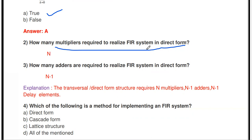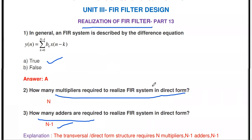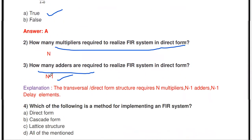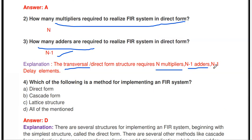How many adders are required to realize the FIR system in direct form? The answer is N-1 adders. Since there are N terms in the equation, to add N terms we need N-1 adders. The transversal or direct form structure — the other name for direct form — requires N multipliers, N-1 adders, and N-1 delay elements (z⁻¹ blocks).